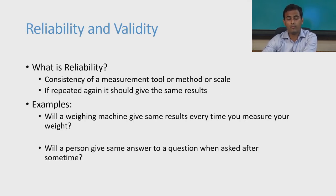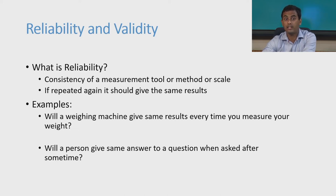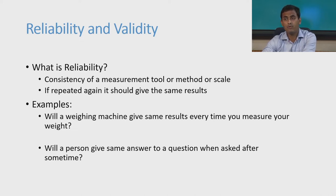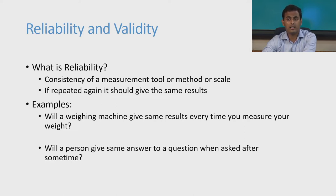It is very important that the contextual enquiry we perform is reliable and valid. Reliability, as scientific knowledge, means consistency of a measurement tool, method, or scale — if the same measurement is repeated, it should give the same results. For example, if you use a weighing machine every time to measure your weight and it gives the same measurement in kg, then you can say that weighing machine is highly reliable because it gives an error-free measurement within a standard deviation of 1 percent.